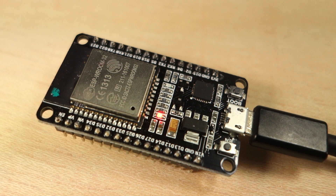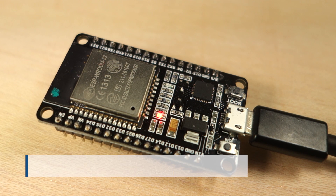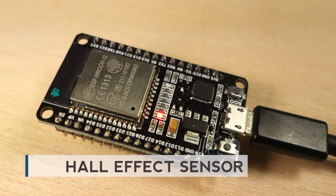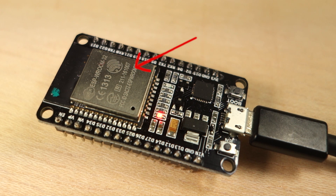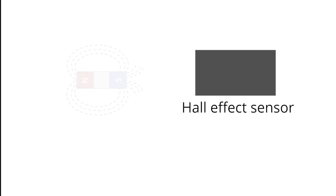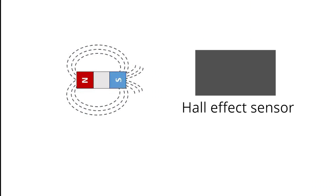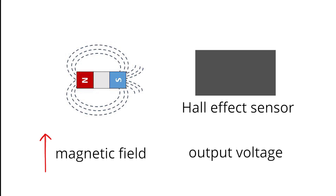The ESP32 features a built-in Hall-effect sensor, which is located here. A Hall-effect sensor can detect variations in the magnetic field in its surroundings. The greater the magnetic field, the greater the output voltage.